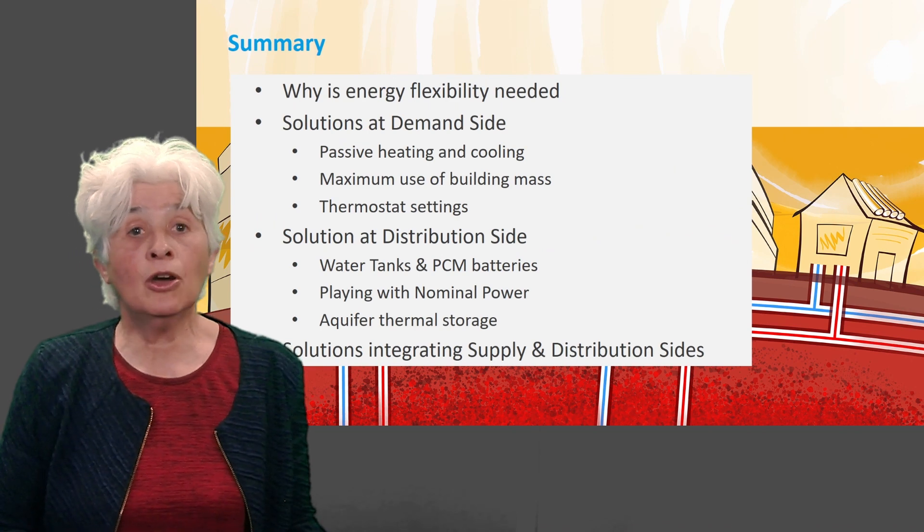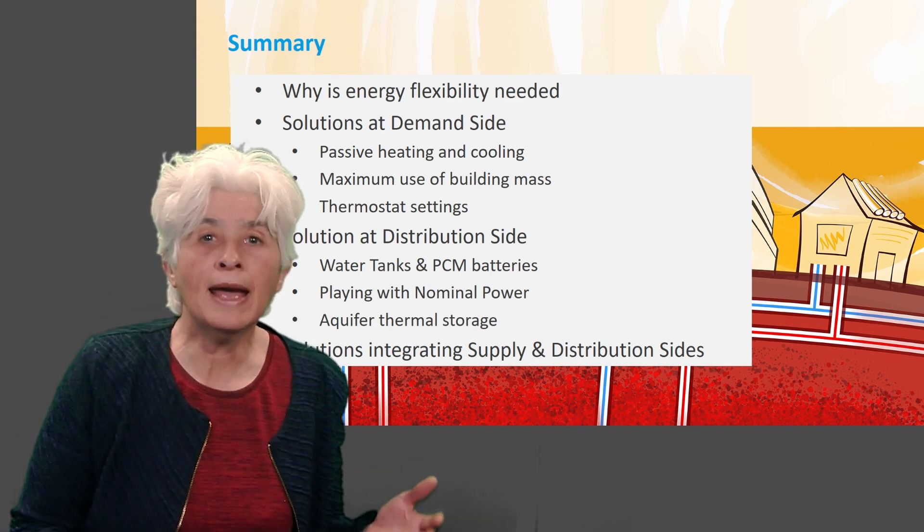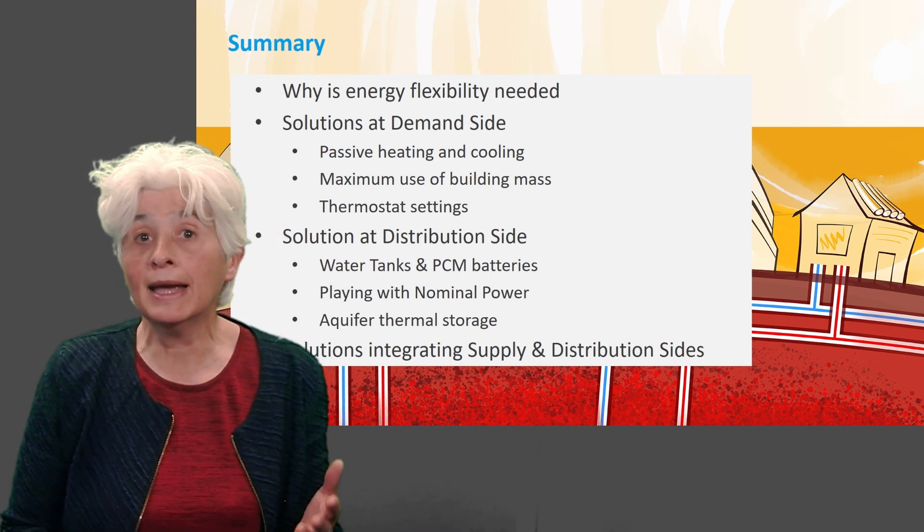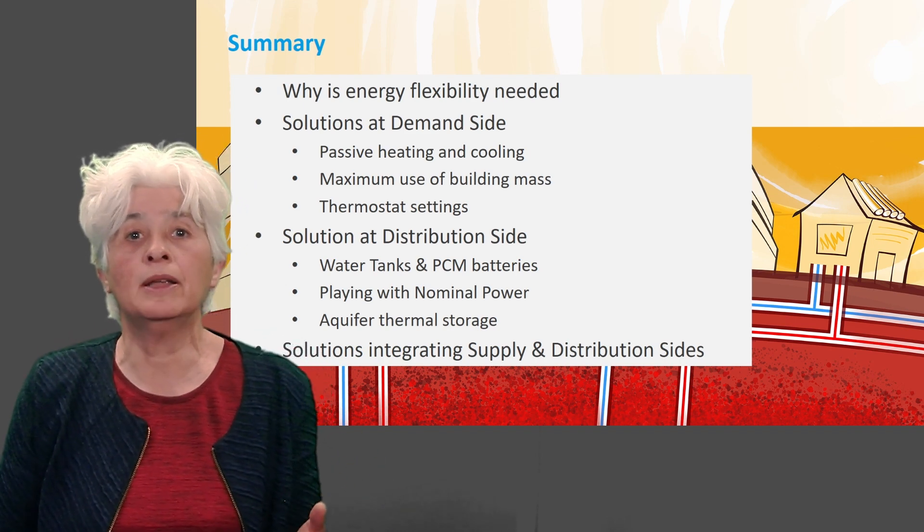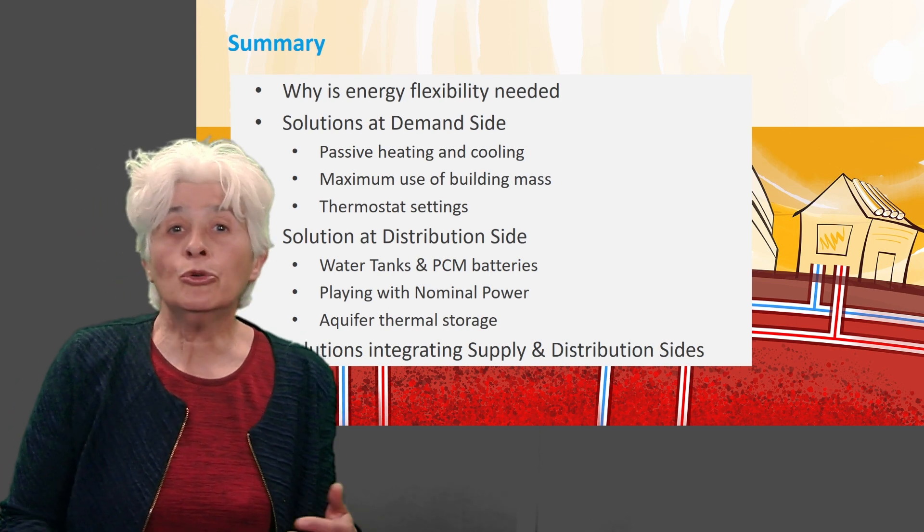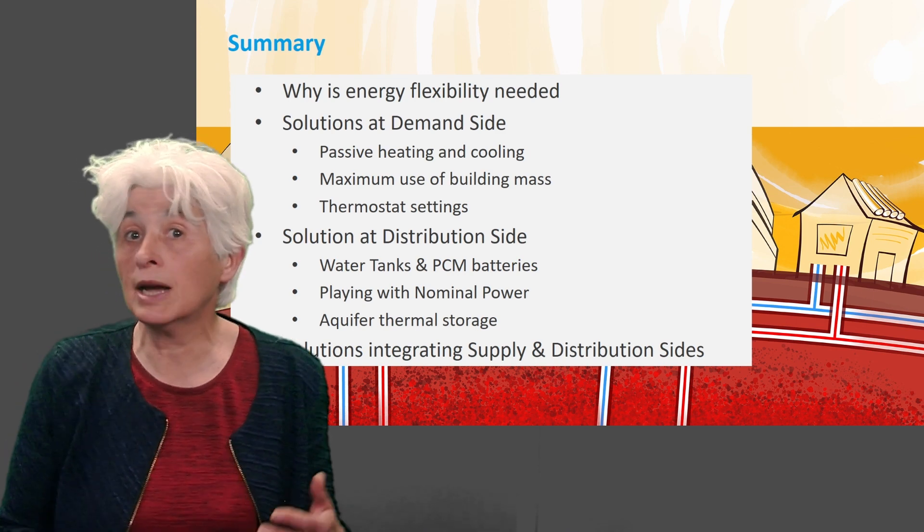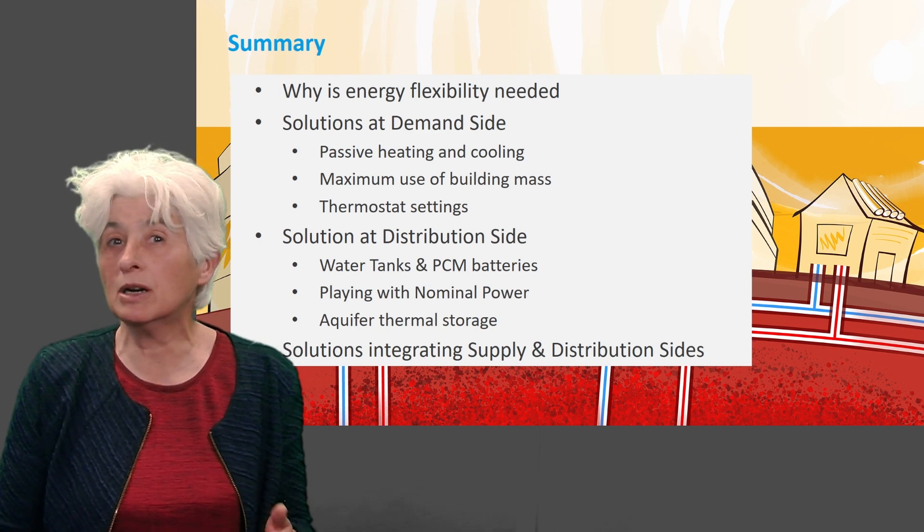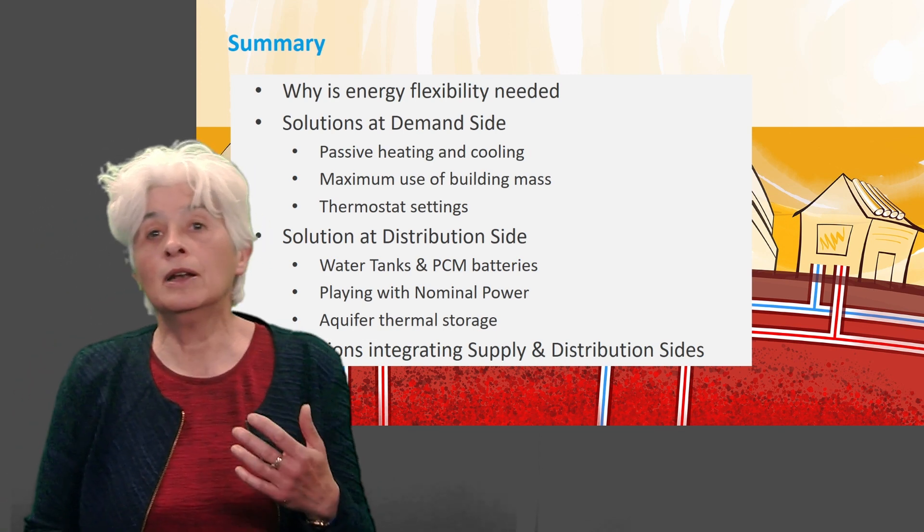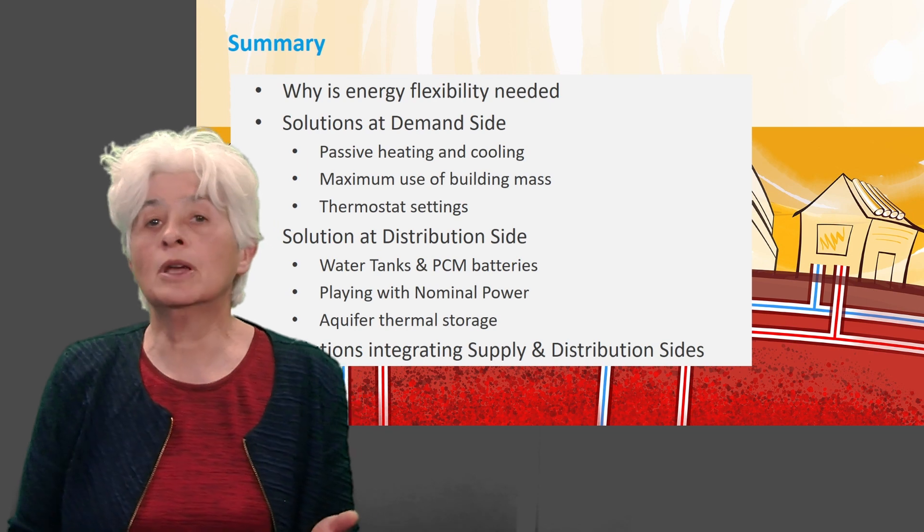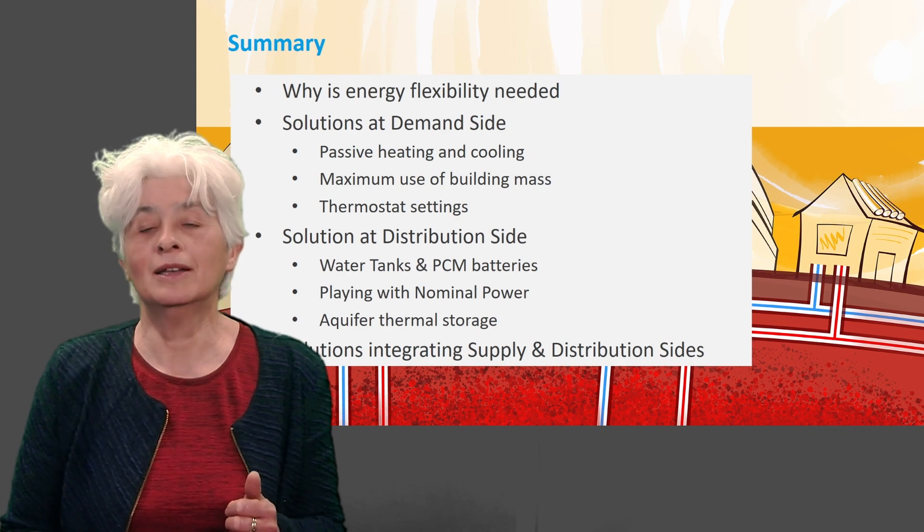So, summarizing, in this lecture you are now aware about the importance of energy flexibility. You know how to enhance it at the demand side by applying passive heating and cooling techniques and by making maximal use of the thermal mass of buildings, by starting heating earlier or using night ventilation for cooling. You are aware of the use of water and PCM tanks to store energy and understand how it helps with playing with the nominal power to reduce the peaks or to store energy when it is cheap or green. Finally, you've got some understanding about how to integrate this knowledge into the design of complex ATES systems for buildings. Goodbye, thank you for listening!